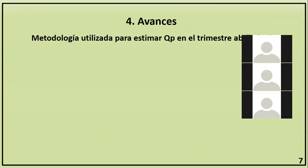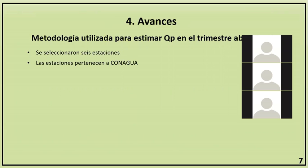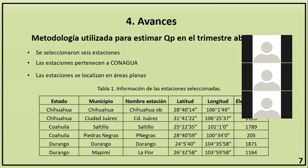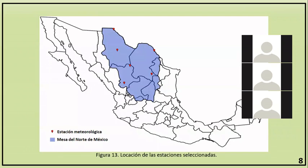Para estimar la radiación PAR en la Mesa del Norte durante el trimestre de abril a junio, se seleccionaron seis estaciones meteorológicas dentro de la zona de estudio. Las estaciones seleccionadas pertenecen a la CONAGUA y están ubicadas en áreas planas. Dos estaciones pertenecen a Chihuahua, dos a Coahuila y dos a Durango, seleccionadas de tal manera que con cada una se pueden caracterizar grandes porciones de la Mesa del Norte, teniendo un conocimiento casi completo de las características climatológicas de la zona.